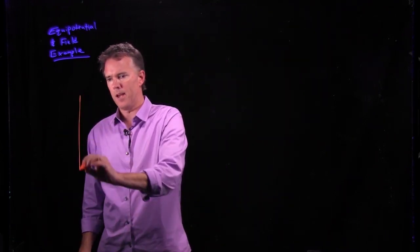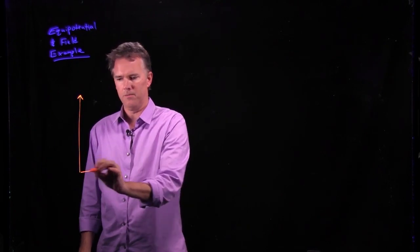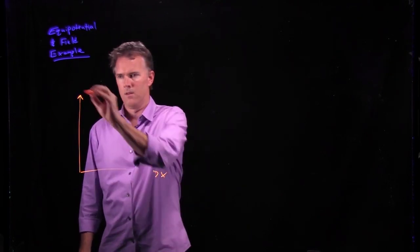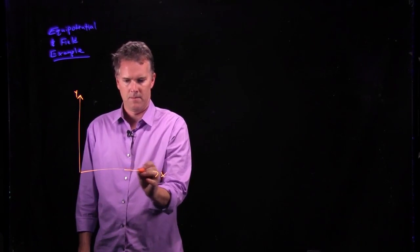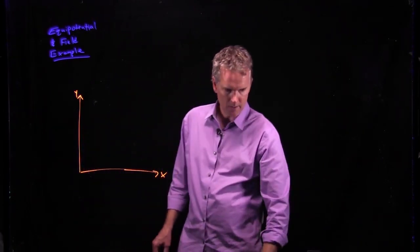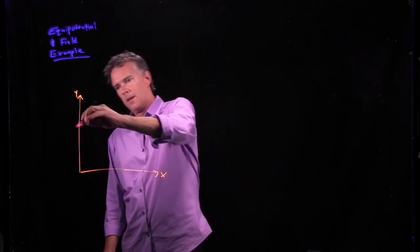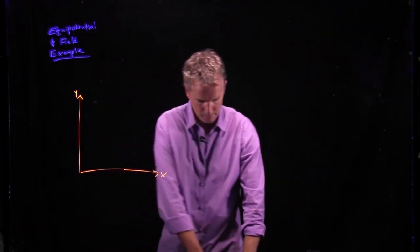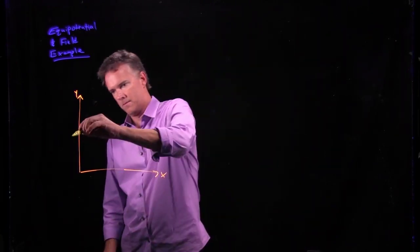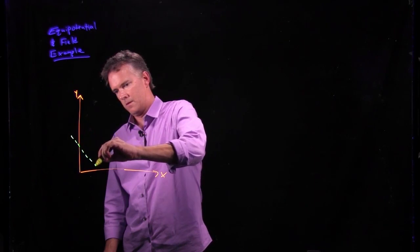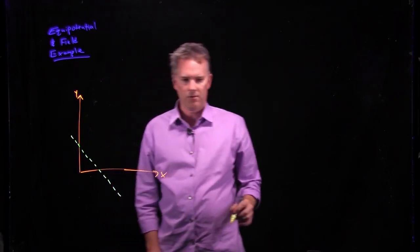Let's say that we do the following. We have an x, y coordinate system, and let's draw our equipotential lines in this direction right here. I'm going to use yellow for this. There's an equipotential.